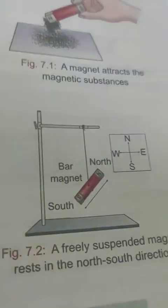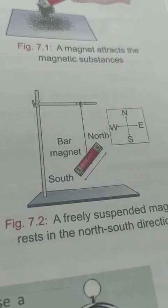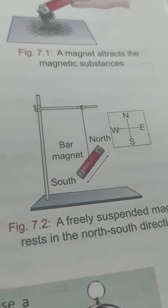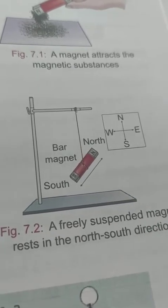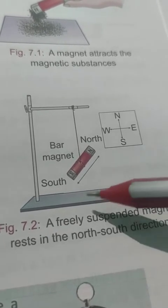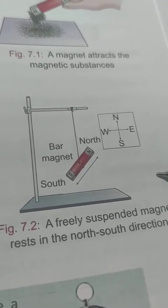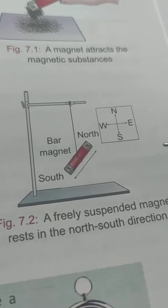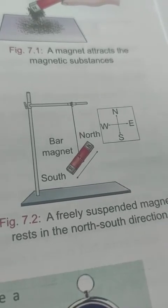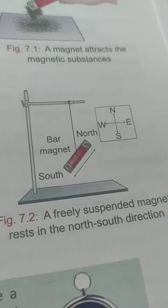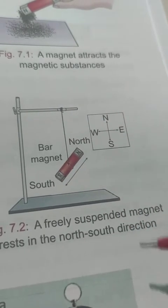The magnet comes to rest in a particular direction — the north-south direction. If we disturb the magnet a little, it again comes to rest in the same north-south direction. The end of the magnet which points towards the north is called the north-seeking pole or simply the north pole, and the end pointing towards the south is called the south pole. They are marked by the letters N and S respectively.